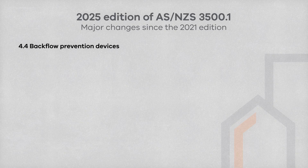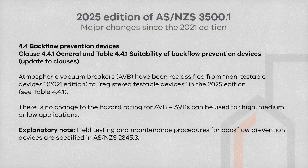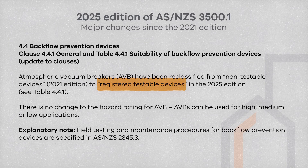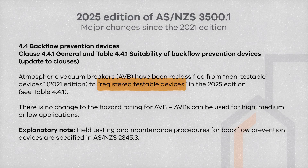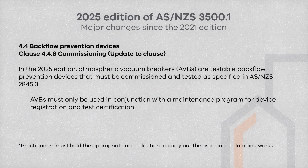There are a few updates to be aware of regarding backflow prevention devices in Clause 4.4. Atmospheric vacuum breakers, commonly called AVBs, have been reclassified from non-testable devices to registered testable devices in the 2025 edition — as found in Table 4.4.1. The hazard rating remains the same, being suitable for high, medium or low hazard risks. As this reclassification lists AVBs as testable devices, they must be commissioned and tested as required by AS/NZS 2845.3, the standard that applies for field testing of testable devices.